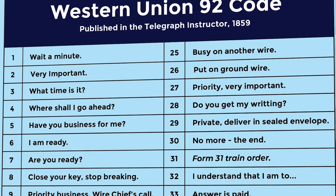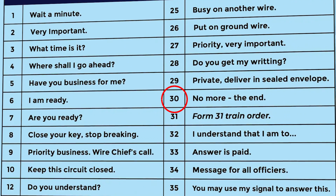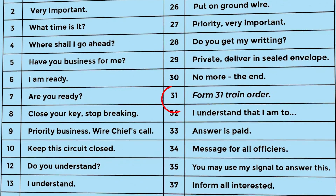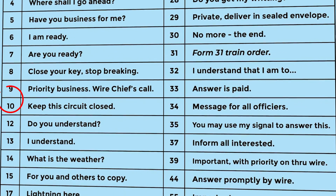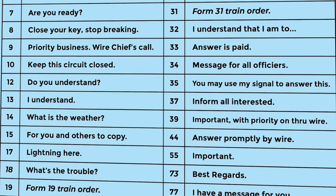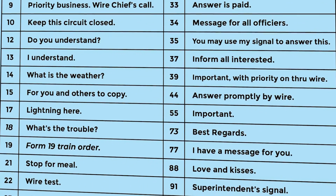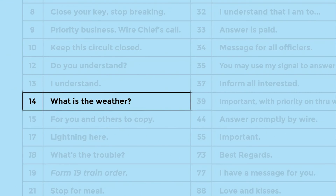Back at the start of this video, we mentioned an 1850 shortcode for telegraphers. Those were standardized in something called the 92 Code by Western Union. These were usually one- or two-digit numbers that would replace longer terms — so instead of sending 'what's the weather,' you just send '14' in Morse. Two of those codes have stood the test of time in amateur radio, crossing over into Morse code in the early days and still being used by voice today.